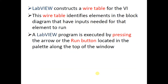LabVIEW constructs a wire table for the VI that identifies elements in the block diagram which have inputs needed for that element to run. From the wire table we can identify which cable is connected to which terminal. A LabVIEW program is executed by pressing the run button located in the palette, which we will see when I give you some examples of LabVIEW palettes.